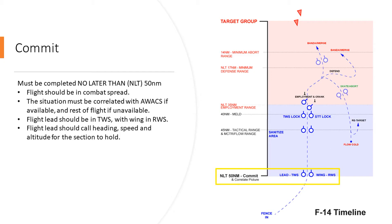The flight lead at this point should be in TWS with the wing in RWS, because we're going to start sanitizing. The flight lead should call heading, speed, and altitude for the section to hold. Because we're going to be in combat spread, you're not going to have those visual references that we normally have when we're in a tighter formation.